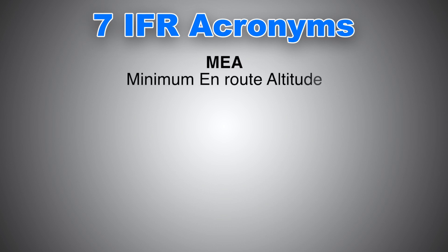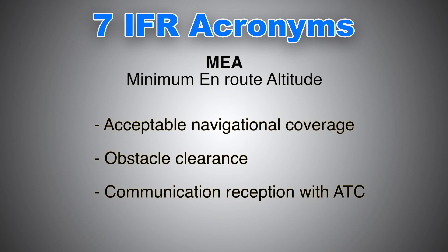Our next acronym is MEA, or Minimum En Route Altitude. It is the lowest published airway altitude which will guarantee acceptable navigational signal coverage along the airway, obstacle clearance of 1,000 feet in non-mountainous areas, and 2,000 feet in mountainous areas. The definition of mountainous terrain is an area of changing terrain profile where the change in terrain elevation exceeds 3,000 feet within a distance of 10 nautical miles.